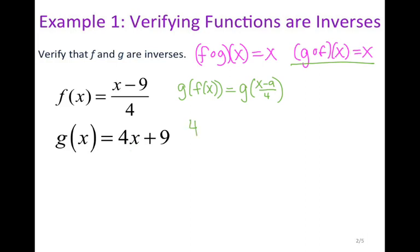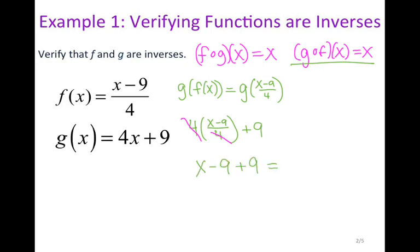So I have 4 times x minus 9 over 4, plus 9. I want to simplify this expression and see if it equals x. Right now I am multiplying by 4 as well as dividing by 4, which means those two 4's are going to cancel. That leaves me with x minus 9 plus 9, which is x. Since my composition equals x, that means yes, these two functions are inverses of each other.